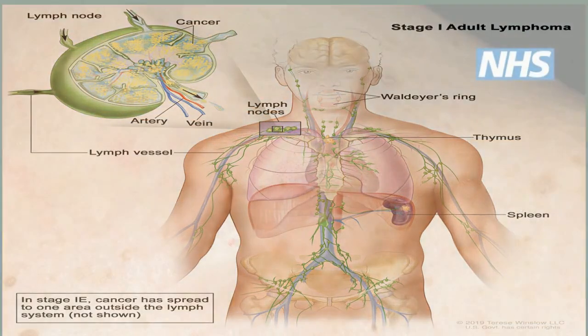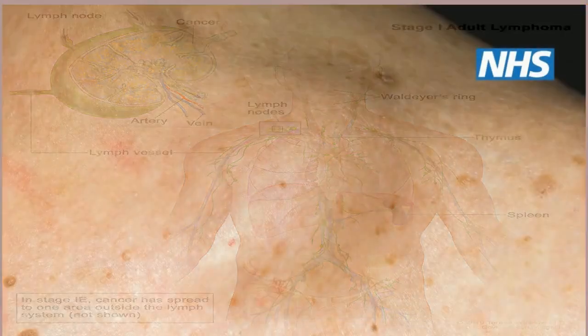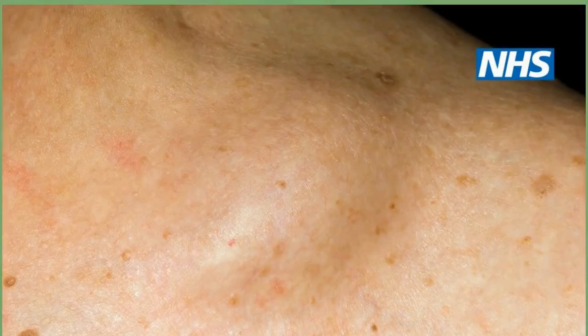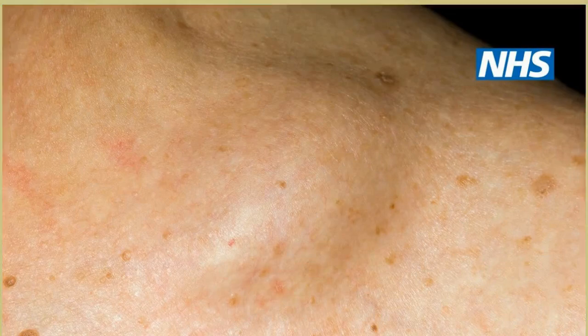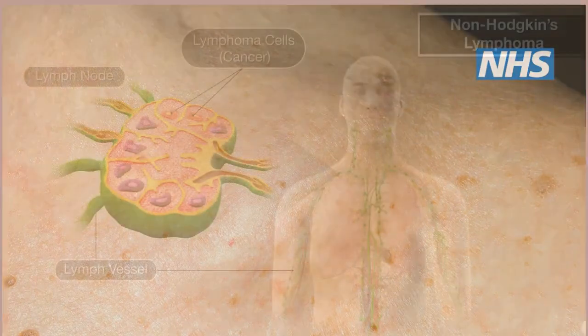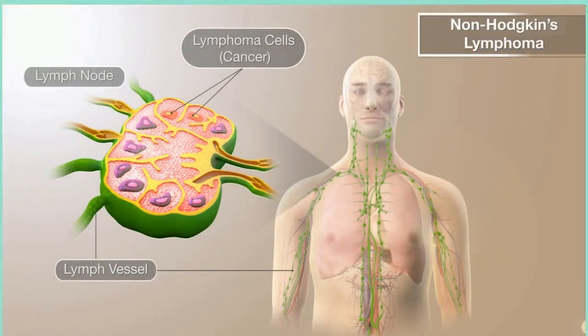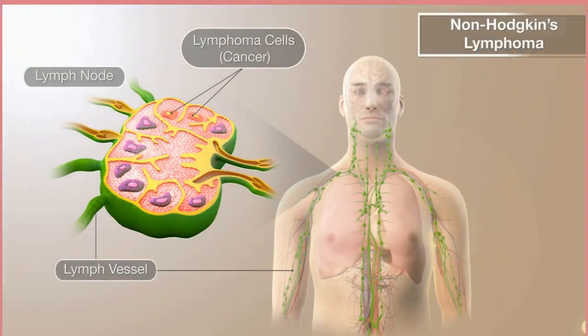The lymph node's function is to prevent infections from entering the bloodstream. When the lymphatic system is fighting an active infection, you may notice that some of the lymph nodes in the area of the infection become swollen and tender. This is the body's normal reaction to an infection.